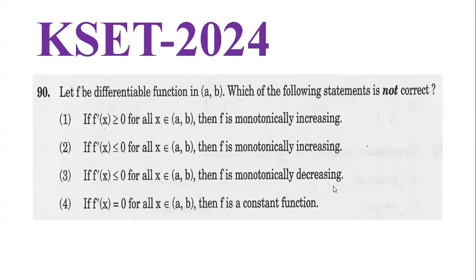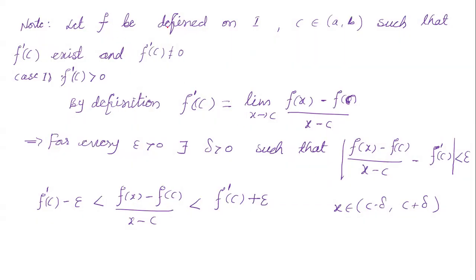The relevant concept: let f be defined on open interval (a, b), and let c belong to (a, b) such that f'(c) exists and f'(c) ≠ 0. Three cases arise: f'(c) > 0, f'(c) < 0, or f'(c) = 0. By definition of differentiability, f'(c) = limit as x tends to c of [f(x) - f(c)] / (x - c).